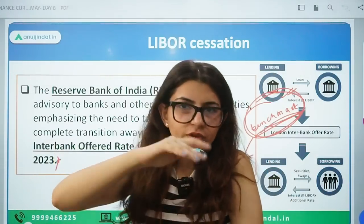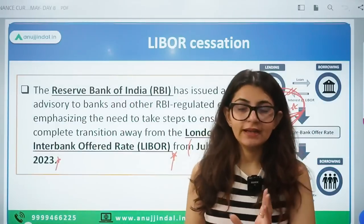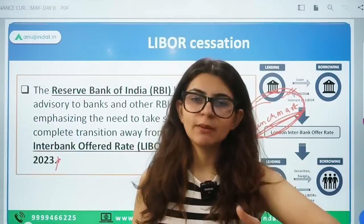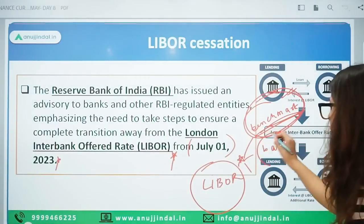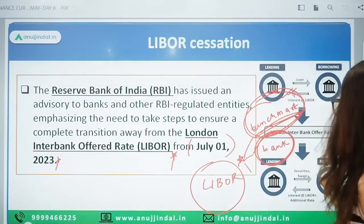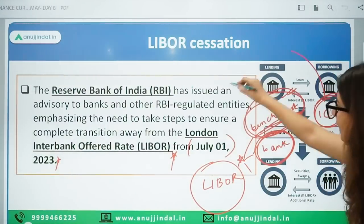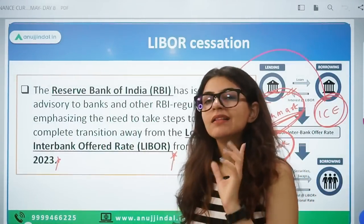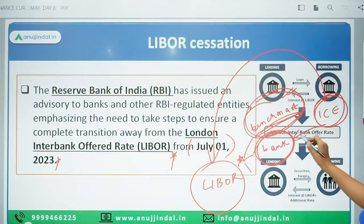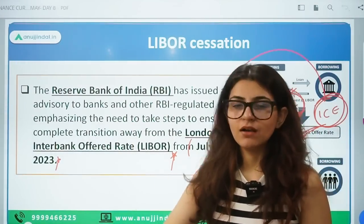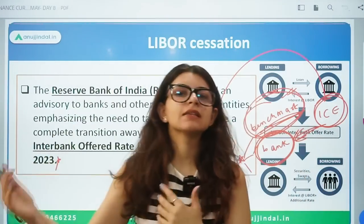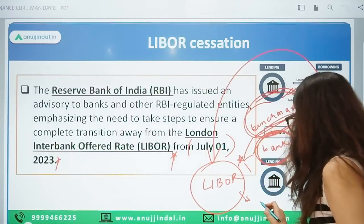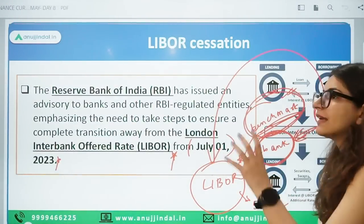External commercial borrowings — when one entity borrows from foreign entities — that is also referenced to LIBOR a lot of times. Now, how was the LIBOR rate determined? Global banks were included in a panel, and ICE — Intercontinental Exchange — the organization that administers LIBOR, would on a daily basis ask these panel banks at what rate they are lending and borrowing. On the basis of average transaction data, LIBOR is decided. It is decided in five currencies and for seven types of maturities.